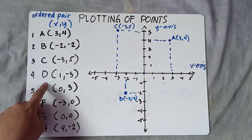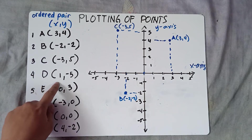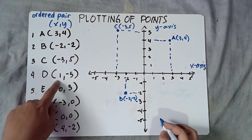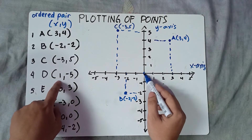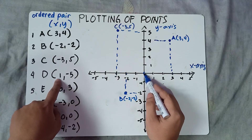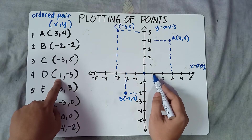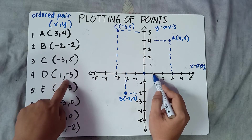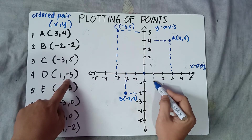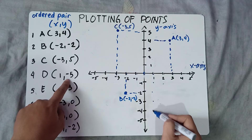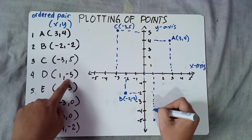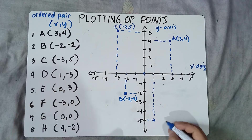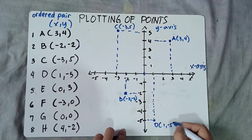Let's try letter D: (1, -5). Follow the ordered pair, x and y. Starting from the origin, since x is 1, you move 1 unit to the right. And y is negative 5, so you move 5 units downward — 1, 2, 3, 4, 5. You can put a broken line. D equals (1, -5).